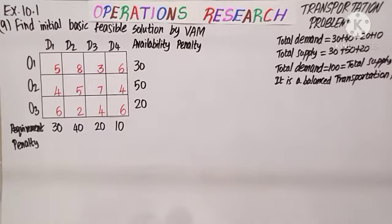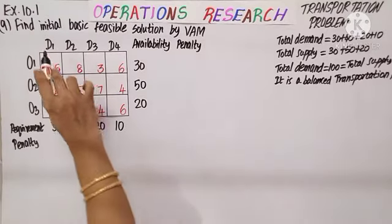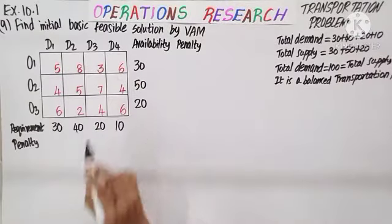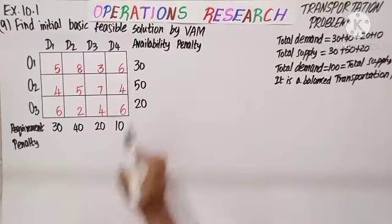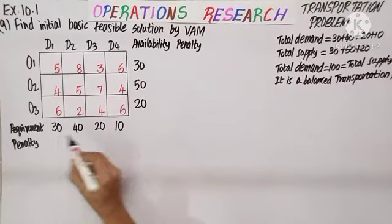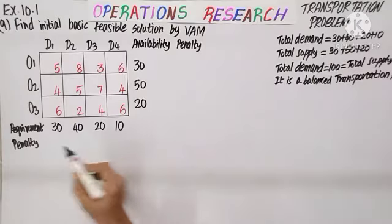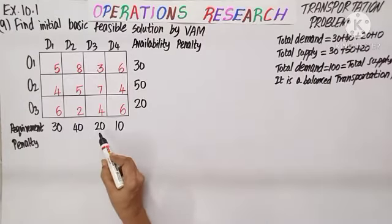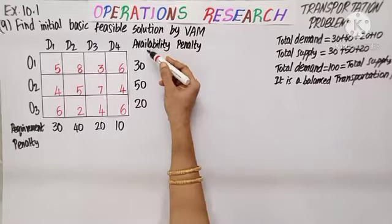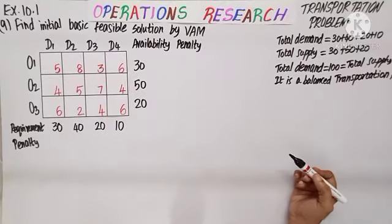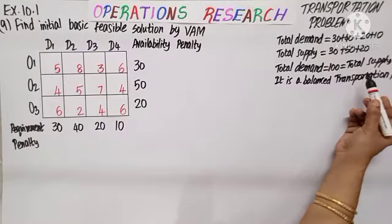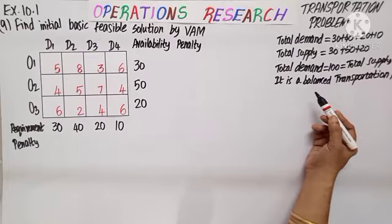Question number 9 — find the Initial Basic Feasible Solution by Vogel's Approximation Method. Given 4 destinations D1, D2, D3, D4 and 3 origins O1, O2, O3. Total demand: 30 plus 40 plus 20 plus 10 is 100. Total availability: 30 plus 50 plus 20 is also 100. Both are equal, so it is a balanced transportation problem.